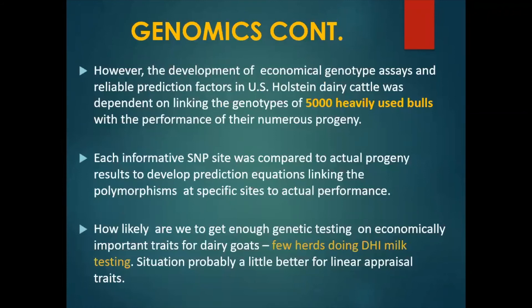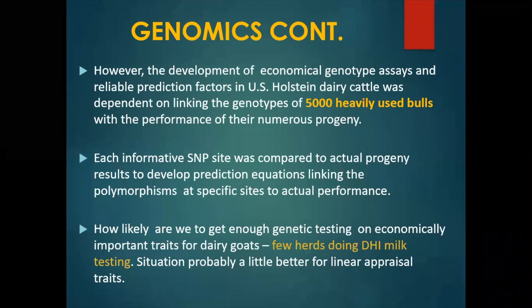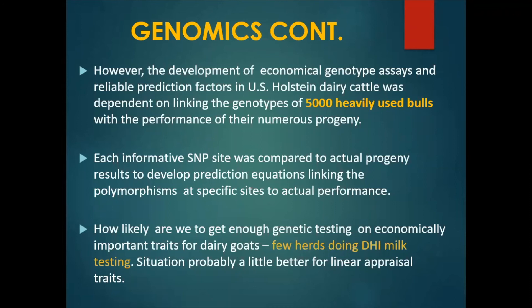However, the development of economical genotype assays and reliable prediction factors in US Holstein dairy cattle was dependent on linking the genotypes of 5,000 heavily used AI bulls with the actual performance of their numerous progeny. These bulls had information on their linear appraisals and also had lots of information on the DHI records or performance of their daughters. Each informative SNP site was compared to the actual progeny results to develop the prediction equations that link polymorphisms at specific sites to actual performance.